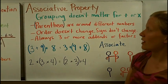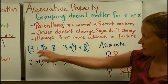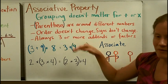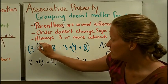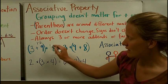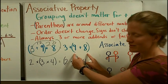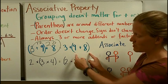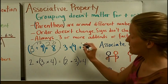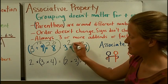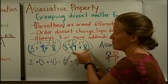Next, the associative property says that grouping doesn't matter for addition or multiplication. For example, 3 plus 9 makes 12, and if I add 8 to it, I get 20 on this side altogether. Over here, the parentheses — these lines going around the numbers — mean do this first. That's what parentheses signal in math. So that would be 17, then plus 3, still making 20 altogether. Where I grouped the numbers did not matter.